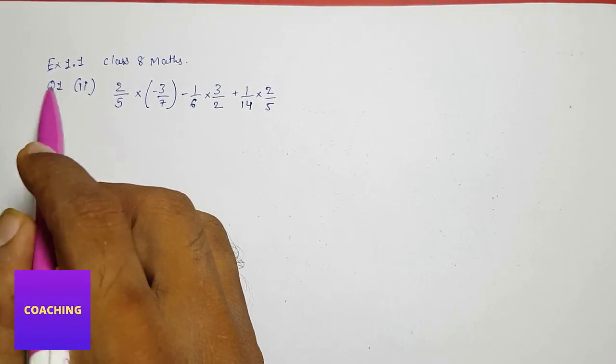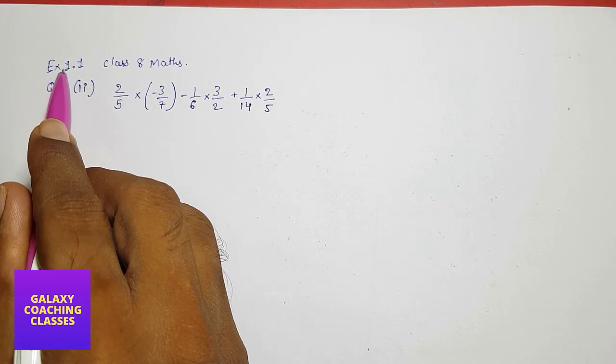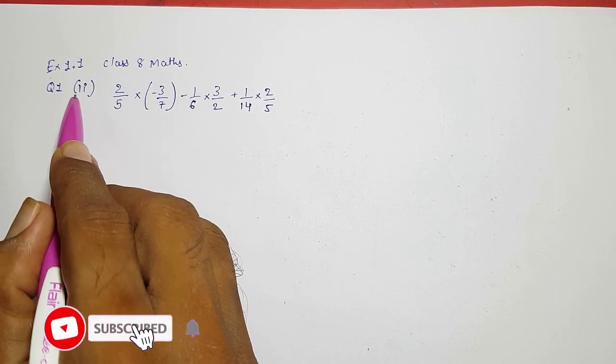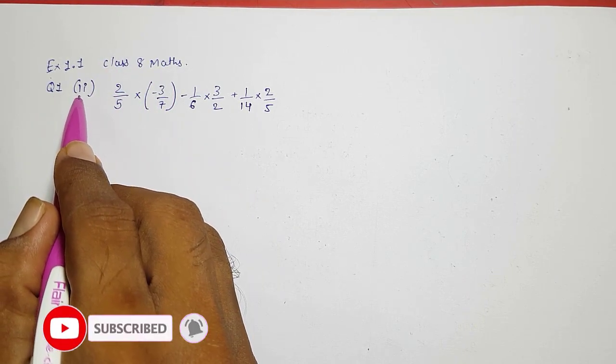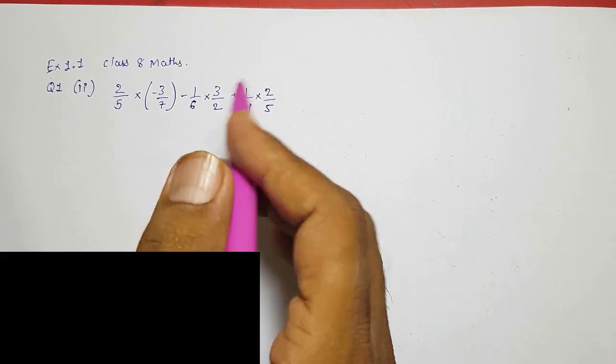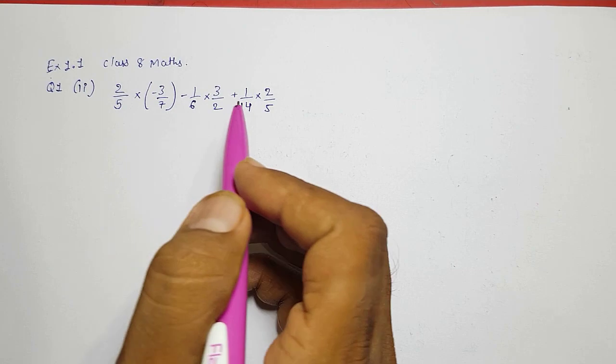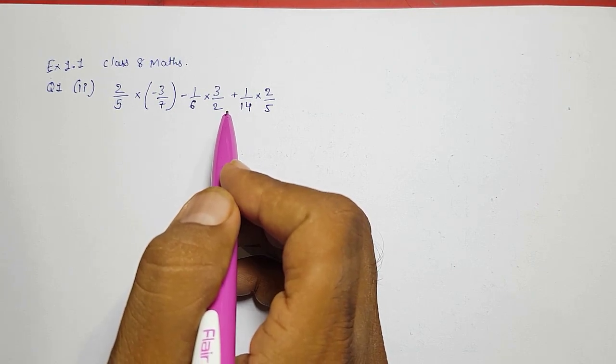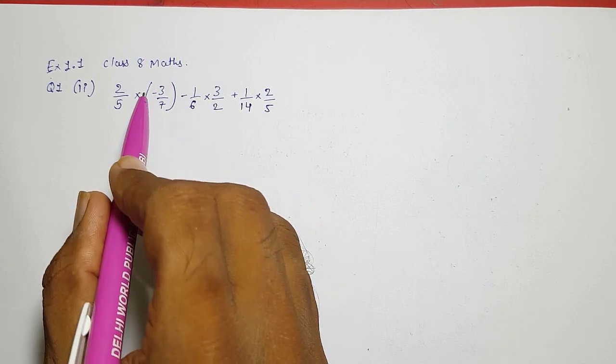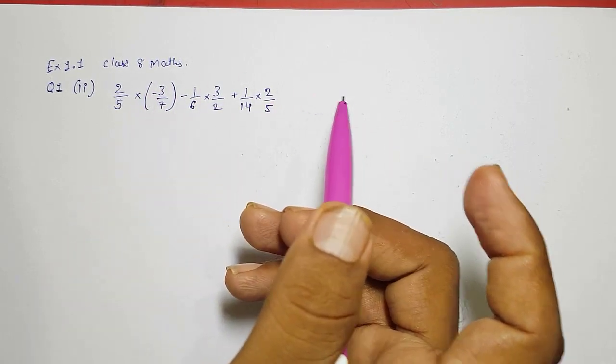Hello friends, my name is Chetan Vadadya and today we are going to solve exercise 1.1 class 8 mathematics question number 1 sub question 2. We already solved question number 1 and I told you which method and property you need to use and I had given one shortcut method also. Here also I am going to solve by both methods. First of all they told us to use the property so we are going to use the property.